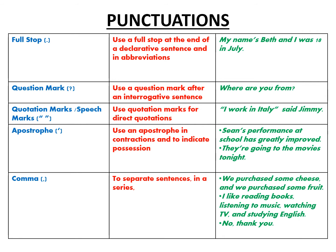Now let us talk about punctuations. You must have observed while reading or even writing that we make use of punctuation marks. There are different punctuations that we use and they have different meanings. The first one is the full stop. This is the most common punctuation mark that we use. A full stop is basically used to end a sentence. For example, 'My name is Beth and I was 18 in July.' Then we put a full stop. It is also called a period.